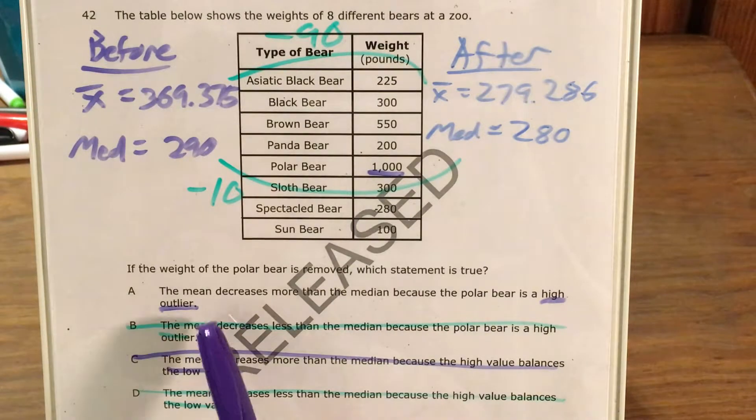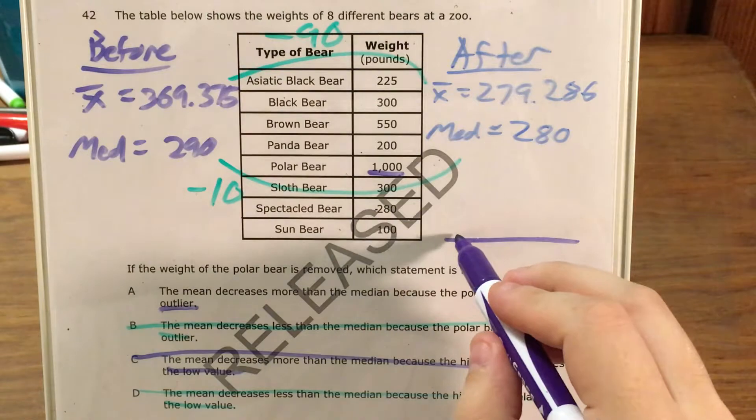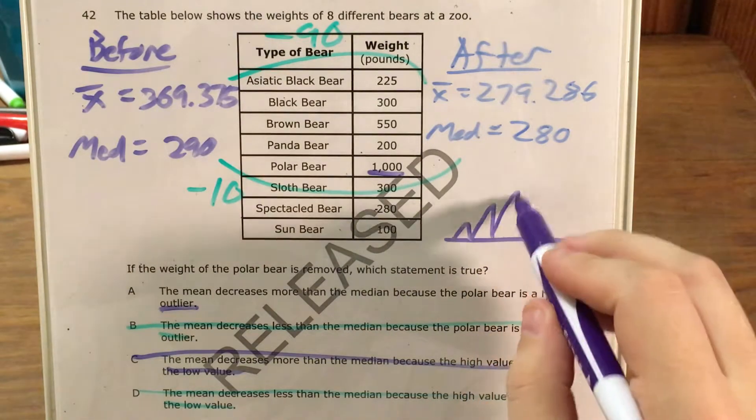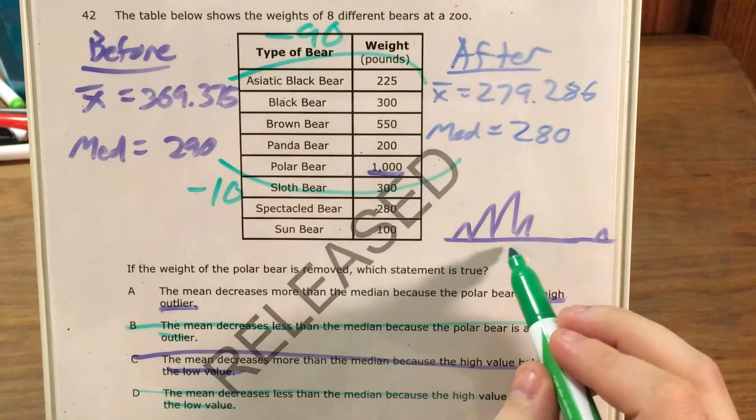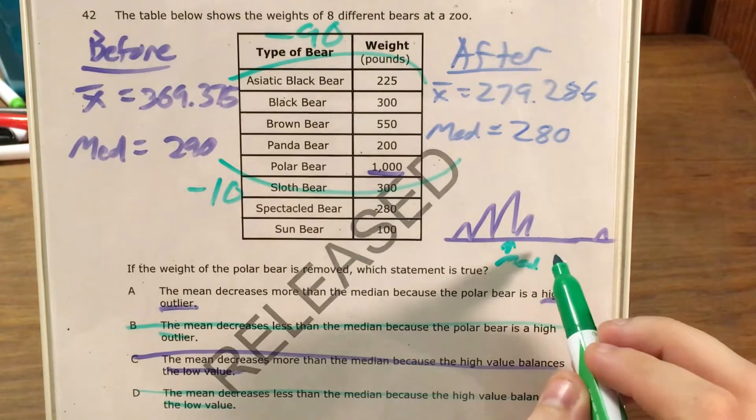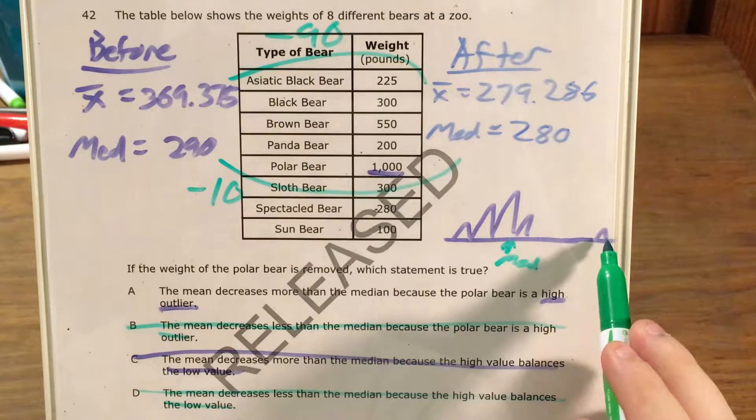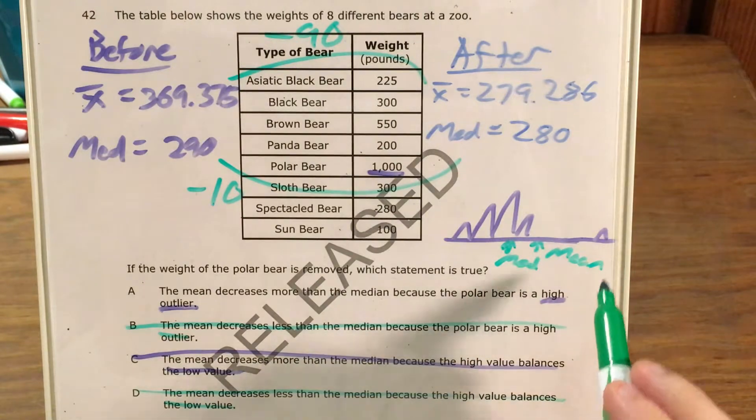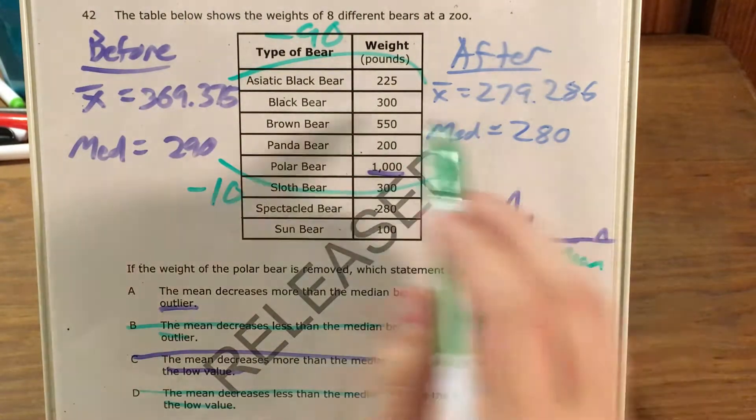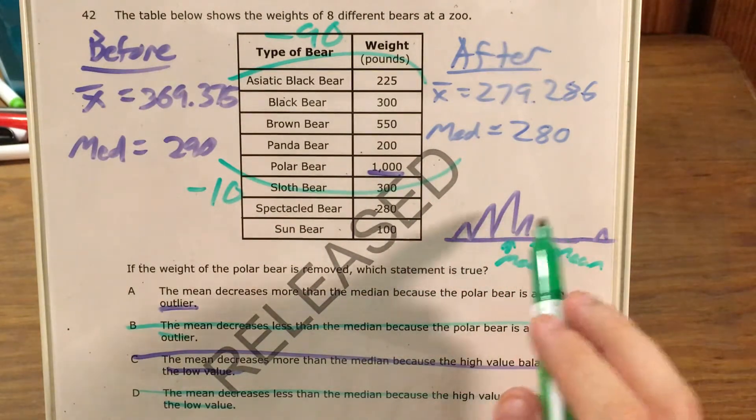And what specifically a high outlier means is that a high outlier drags the mean out much more than the median because essentially if this is our data set, the median is going to be the exact middle number, and that's right about here. The mean, however, is like the balance point. And if we think of this like a scale, even a little bit of weight placed all the way over here will drag that balance point to the right. So getting rid of that knocked our mean down by a lot and our median down by just a little bit because it was kind of rewriting that balance.